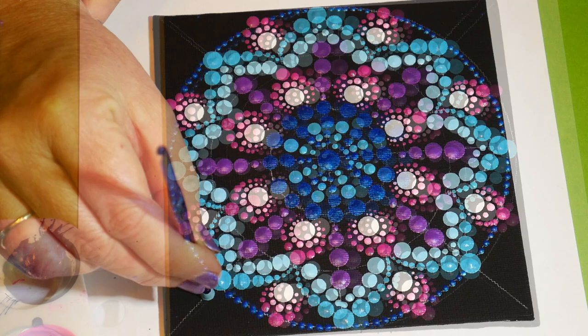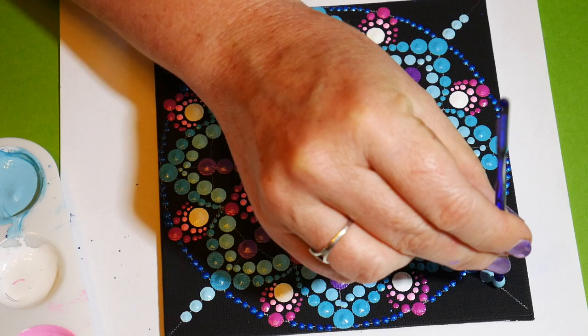Now along that circle I'm doing the vibrant blue again, and then adding light blue dots out to the corners.